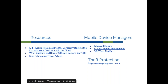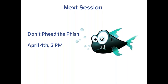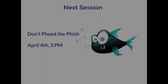Resources: the EFF's 'Digital Privacy at the U.S. Border — Protecting Data on Your Devices and in the Cloud' covers what customs and border officials can and can't do. There's also an article discouraging made-up advice on this topic. Links for mobile device managers and theft protection are included. In two weeks: Don't Feed the Fish — phishing, social engineering, and ransomware on April 4th at 2 p.m.